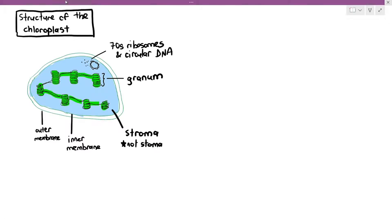Stoma are the opening in the leaf, where it allows gas exchange and transpiration to happen. But the stroma is the space, the liquid-filled space inside the chloroplast, where the granum, ribosomes, and circular DNA are floating around.